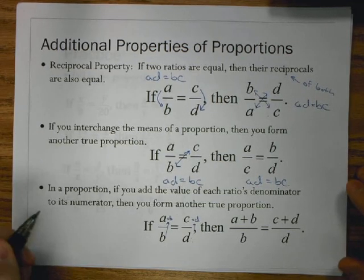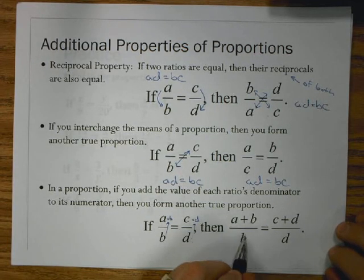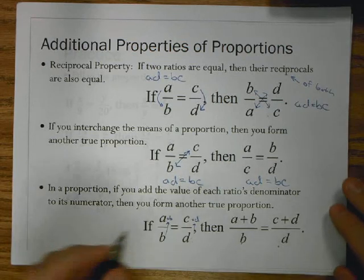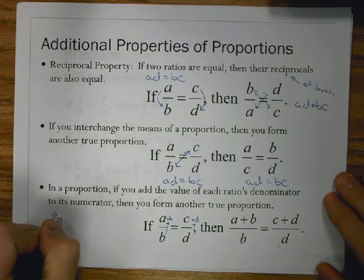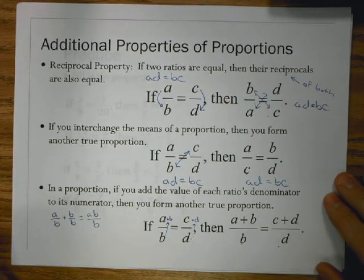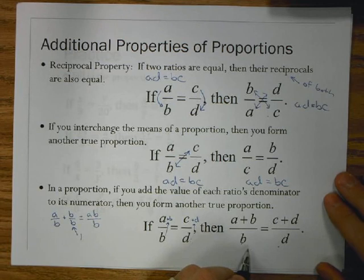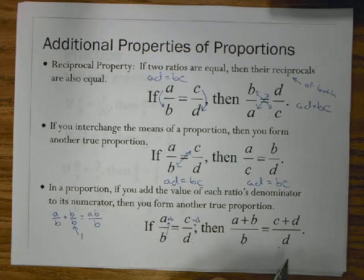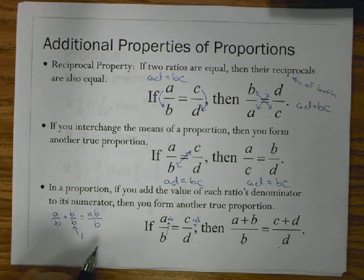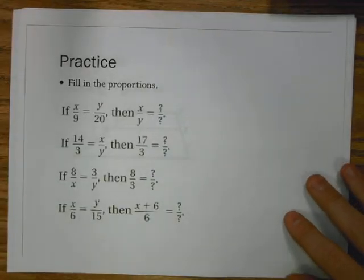The third property says: if you add the value of each ratio's denominator to its numerator, you form another true proportion. So from a/b = c/d, I get (a+b)/b = (c+d)/d. What's really happening is I'm adding b/b (which equals 1) to a/b, and d/d (which equals 1) to c/d — adding the same value (1) to both sides of an equation, just disguised a little differently.